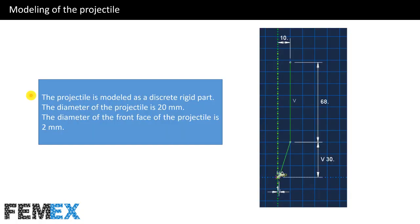Now I want to talk about modeling of the projectile. The projectile is modeled as a discrete rigid part. The diameter of the projectile is 20 mm and the diameter of the front face of the projectile is 2 mm. As you can see, the radius of the projectile is 10 mm and the radius of the front face is 1 mm. Now I want to show you these settings in Abacus.